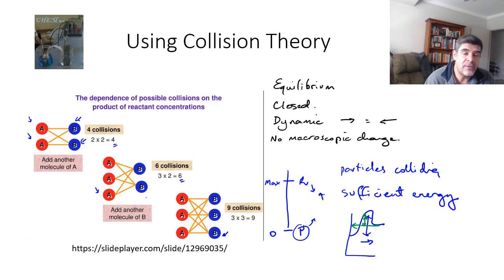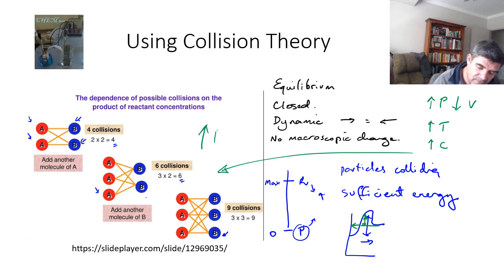Once we do that, we can start to look at things like increasing pressure through a decrease in volume, which is actually pushing the particles closer together, more likely for collisions to occur. Increasing the temperature is going to make the particles move faster, and therefore is more likely to increase the rate of collisions. Increasing the concentration is what we looked at over here. And again, more particles means more opportunities for collisions, and hence an increase in the reaction rate.